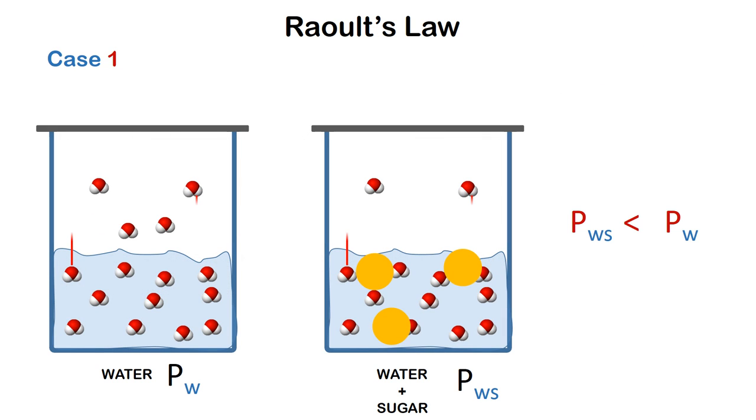When a solute like sugar is added in water, the molecules of sugar prevent the water molecules from evaporating. Therefore, the vapor pressure of this solution of water and sugar is less than the vapor pressure created by pure water.